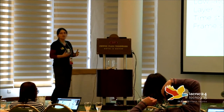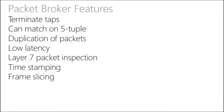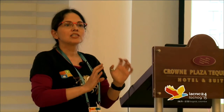This is what the solution has to have in order to be a good solution for us. First, we need to terminate all the optical taps — we are tapping into the network. You need to match on a five-tuple: source IP, destination IP, source port, destination port, and protocol. You need to avoid packet duplication so you don't see the same packet two or three times. You need very low latency for services like voice or video streaming. You need layer-7 packet inspection, the ability to add timestamps, and frame slicing — so only the headers of the packet are sent to the inspection station, and the content of the packet is never transmitted as part of the troubleshooting.